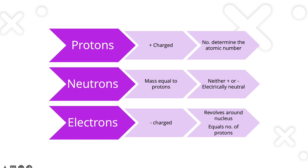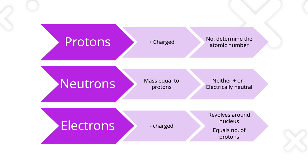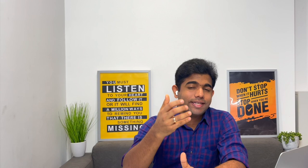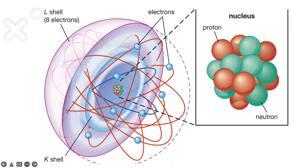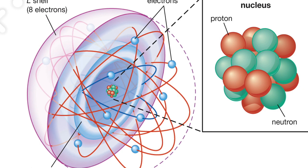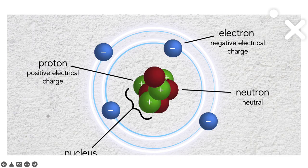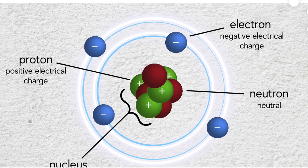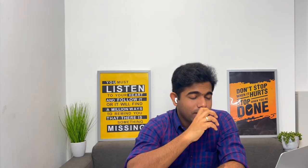Protons are positively charged and determine the atomic number. Electrons are negatively charged, and in a neutral atom the number of protons equals the number of electrons. Neutrons are neither positively nor negatively charged, and their mass is equal to that of the proton. In the diagram you can see the nucleus at the center containing protons and neutrons, with different shells of electrons all around it.